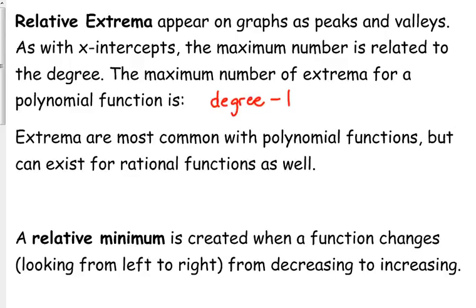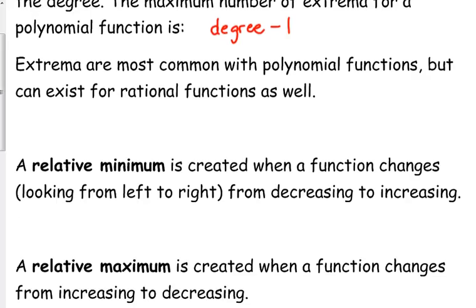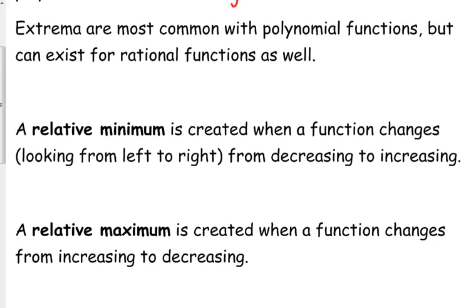The technical definition of a relative minimum is that when you're looking from left to right, if your function changes from decreasing to increasing, that creates a relative minimum. A relative maximum is the opposite - when your function changes from increasing to decreasing.